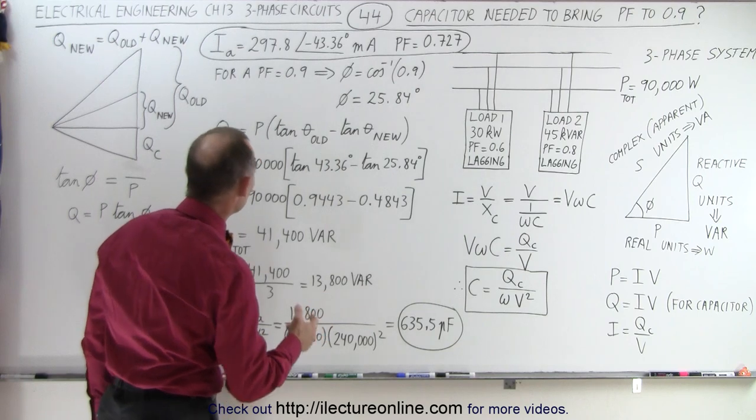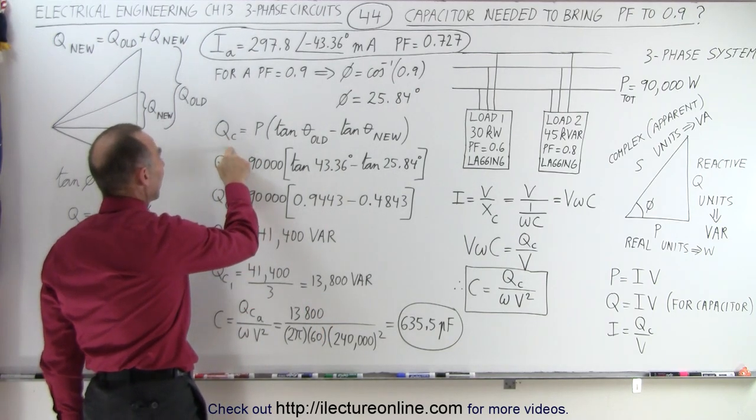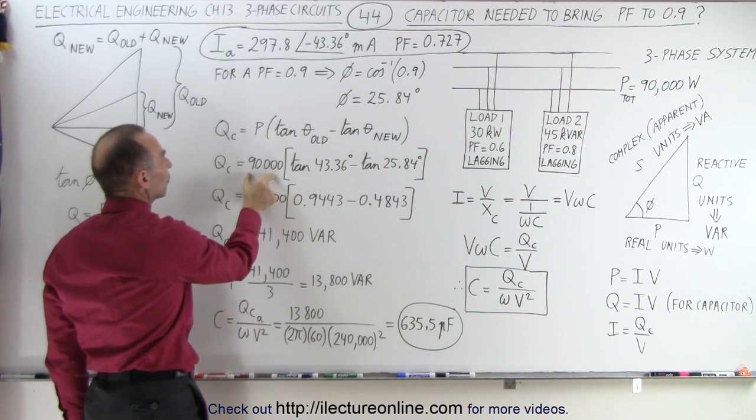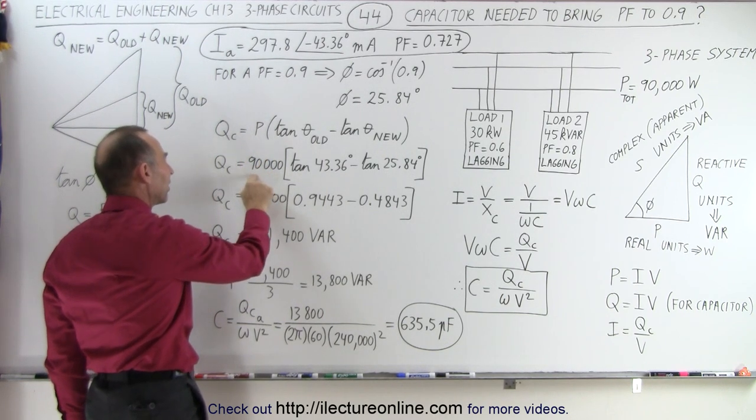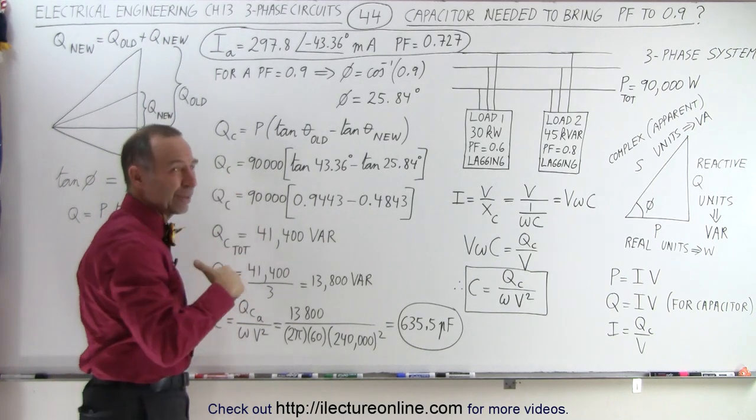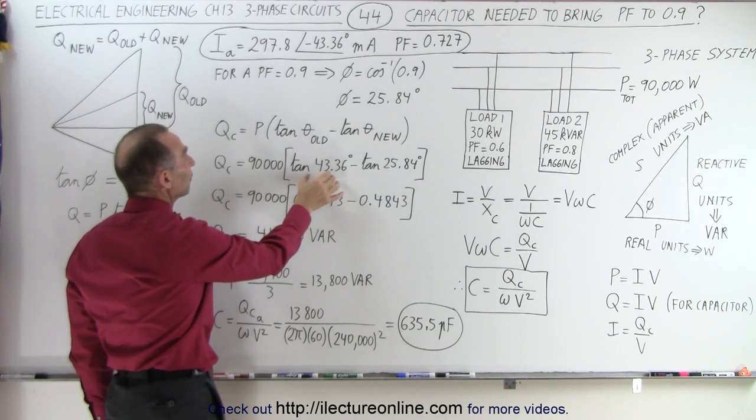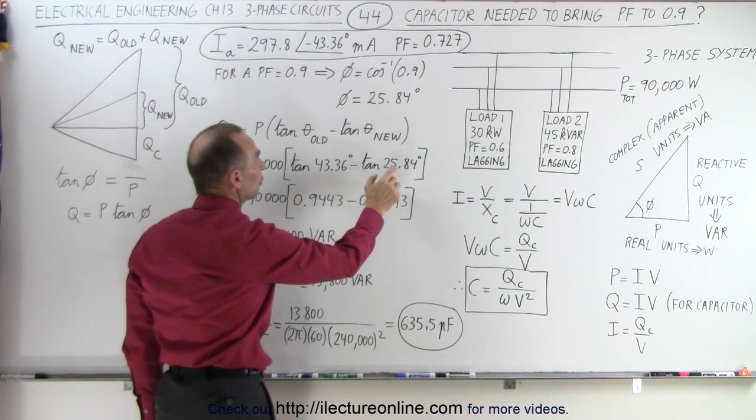We also need to know that the reactive power of the capacitor can be found by saying, I have the original power, which was 90,000 watts, or in this case, since we're talking about reactive power, it's 90,000 VAR, times the tangent of the old angle minus the tangent of the new angle.